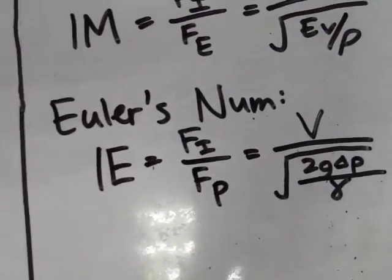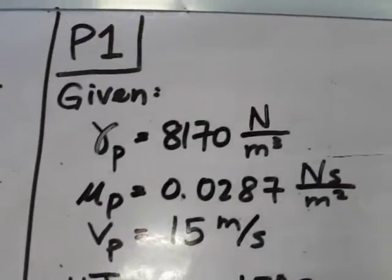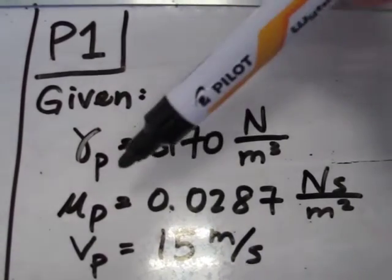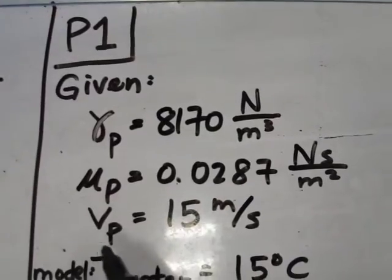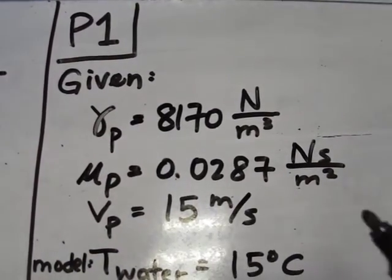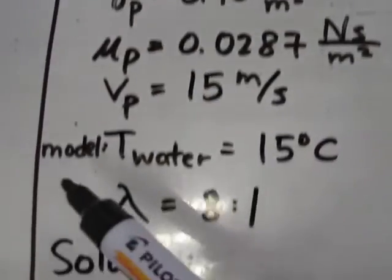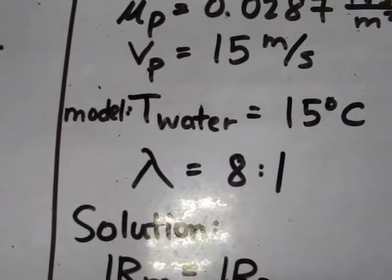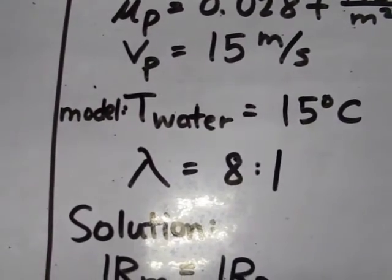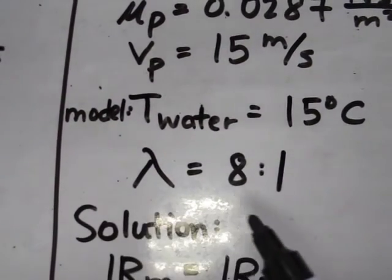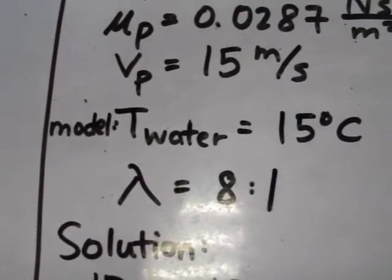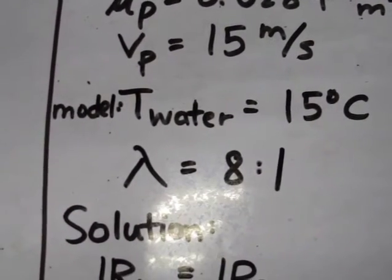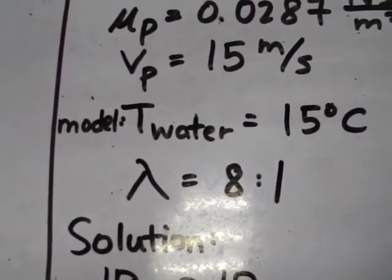To illustrate, let me give an example using Reynolds number. In this problem, you are given the specific weight of the prototype, the absolute viscosity of the prototype, and the velocity of the prototype. Also, the model will be submerged in water at a temperature of 15 degrees Celsius, and the scale ratio is equal to 8 to 1. The problem requires us to solve for the velocity of the model. Since the problem states that there is no wave action, we use Reynolds number.